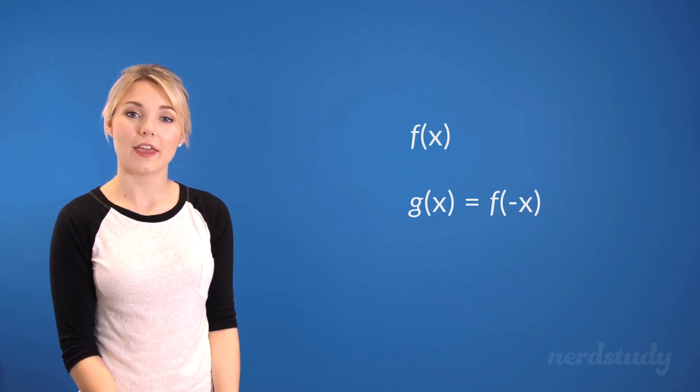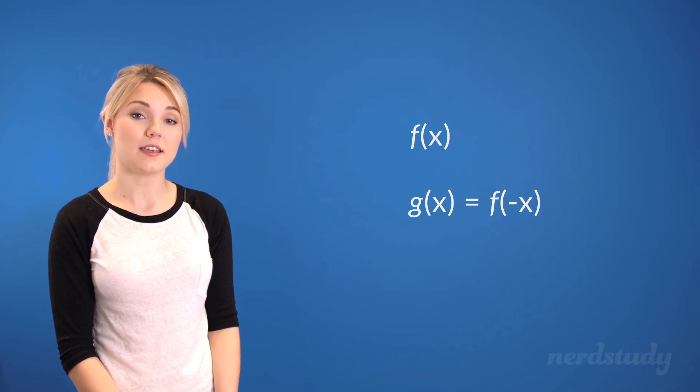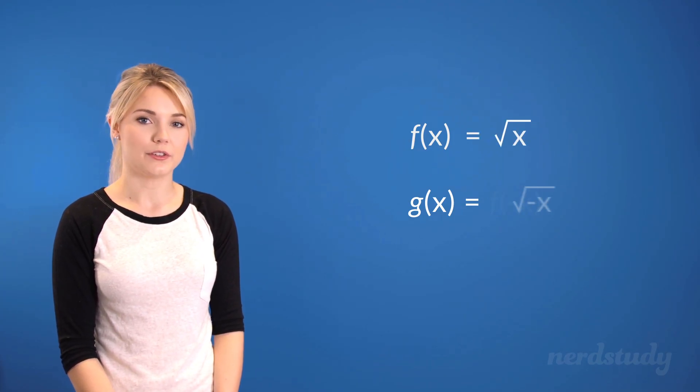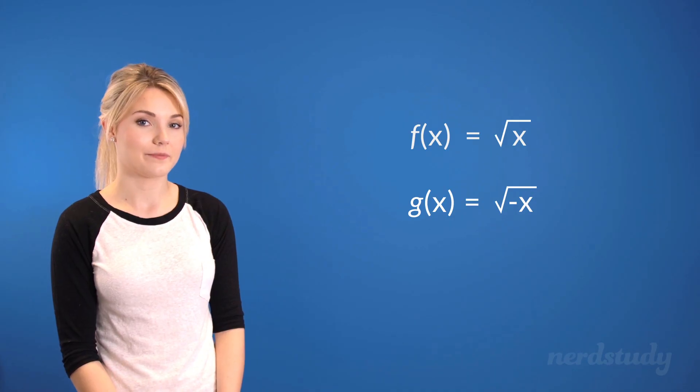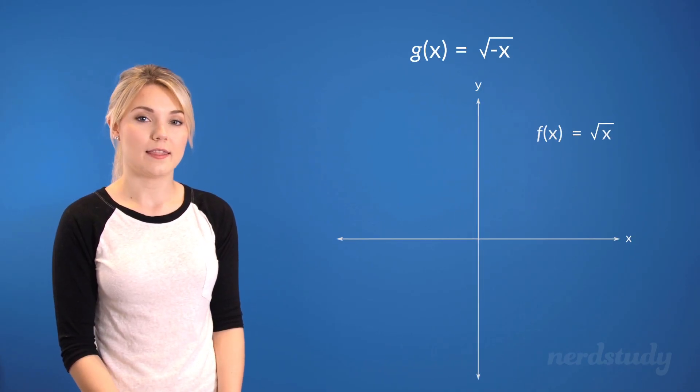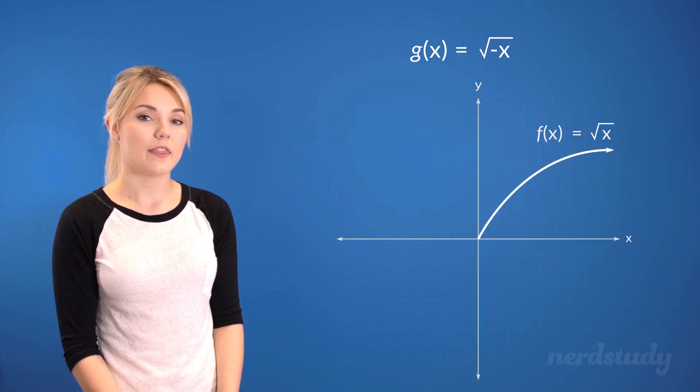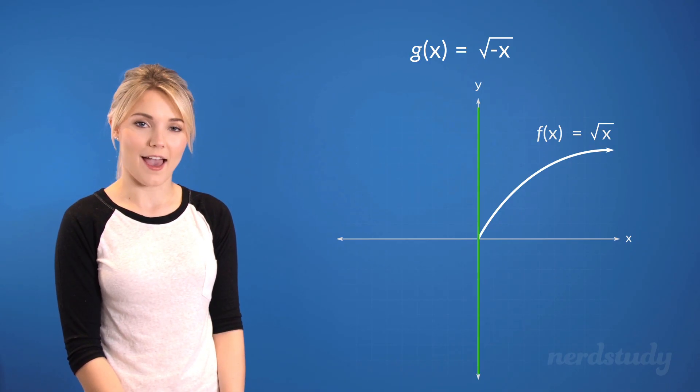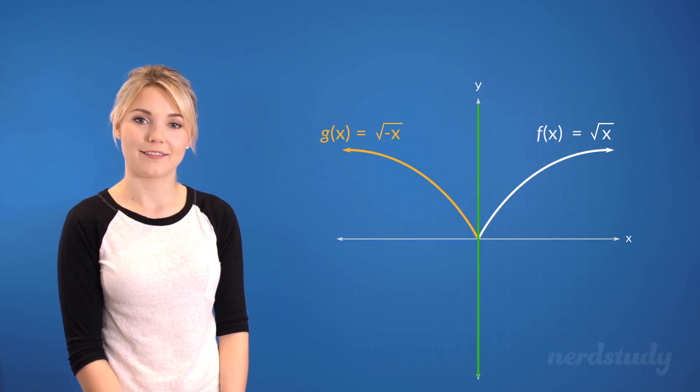Now, instead, if we were looking at an f(x) that was equal to square root of x, then our g(x) would be equal to square root of negative x. And if we represented this on the graph again, we'd see that applying the negative sign within the brackets reflects the graph along the y-axis as its reflection point.